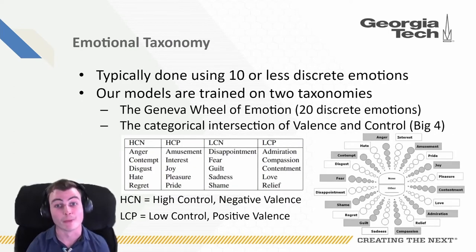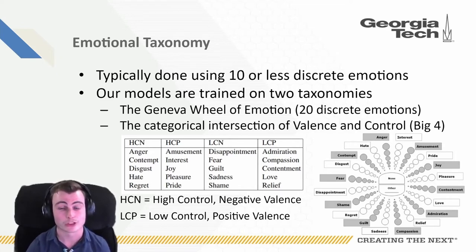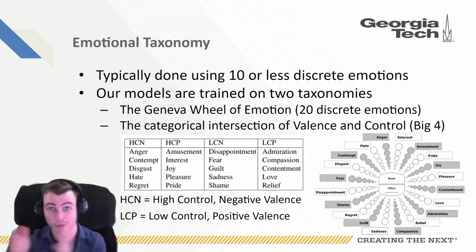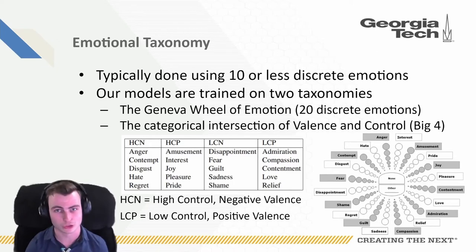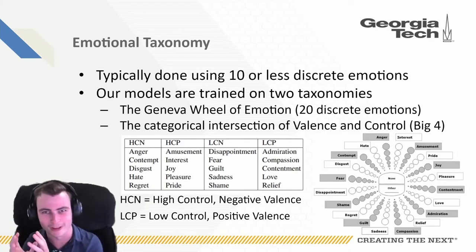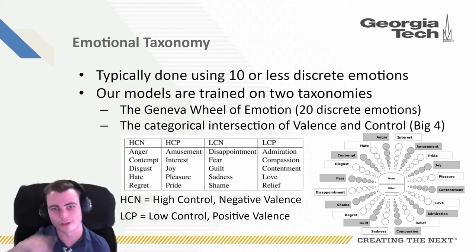Let's talk about our emotional taxonomy. For this project, we use two main taxonomies. We use one, which is the categorical or single approach, where we divide emotion up into 20 different buckets. This is much larger than traditional models used — usually models use 10 or less. And then our second approach is to take these 20 different buckets and squeeze them into four buckets as the quadrants of intersection between valence and control.